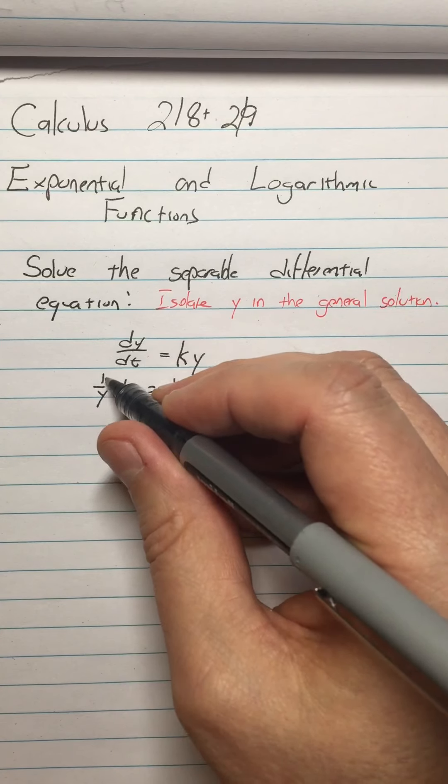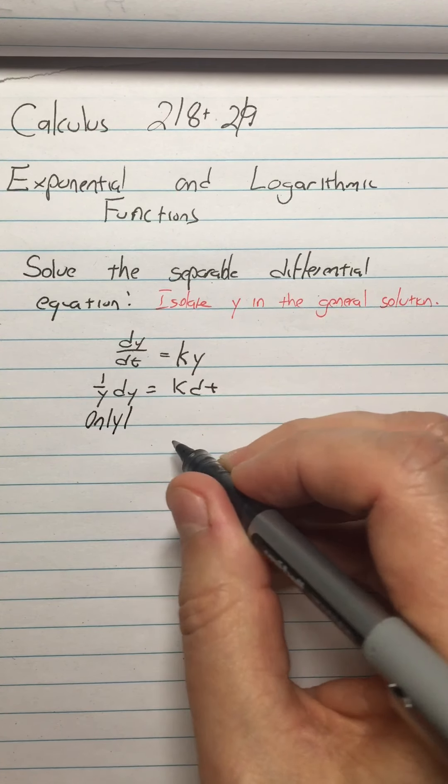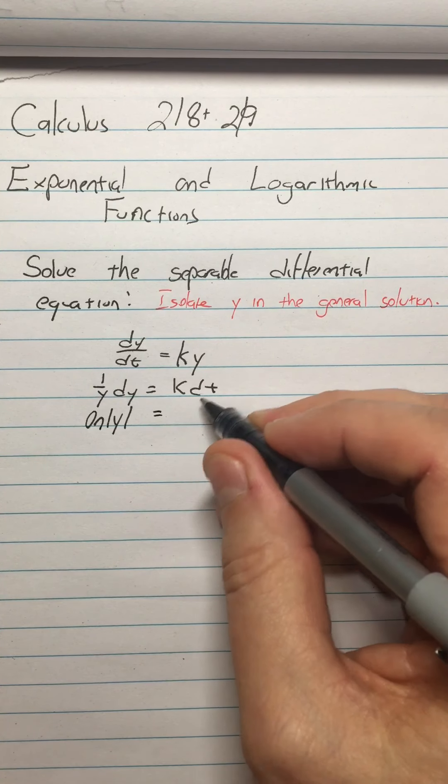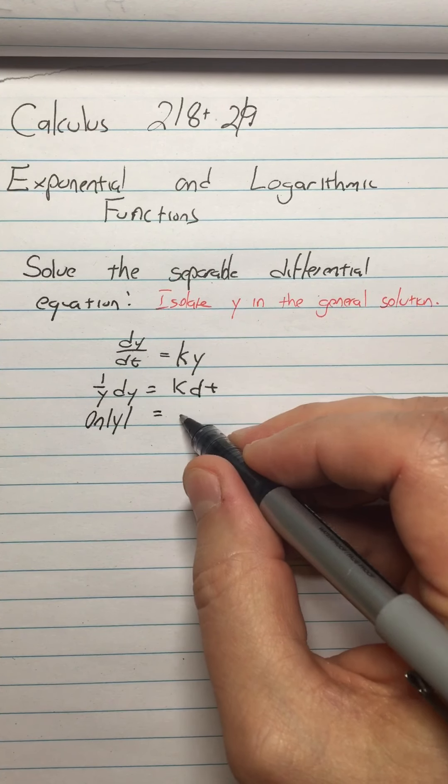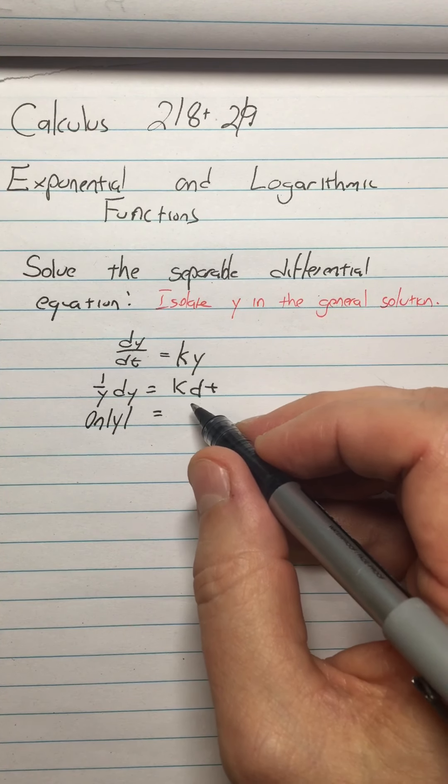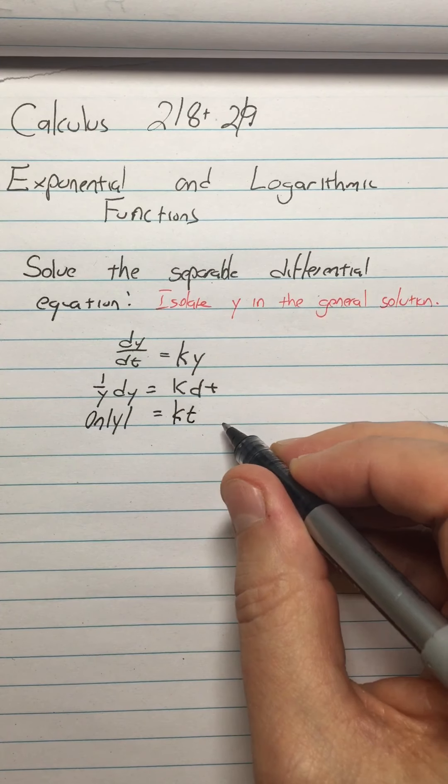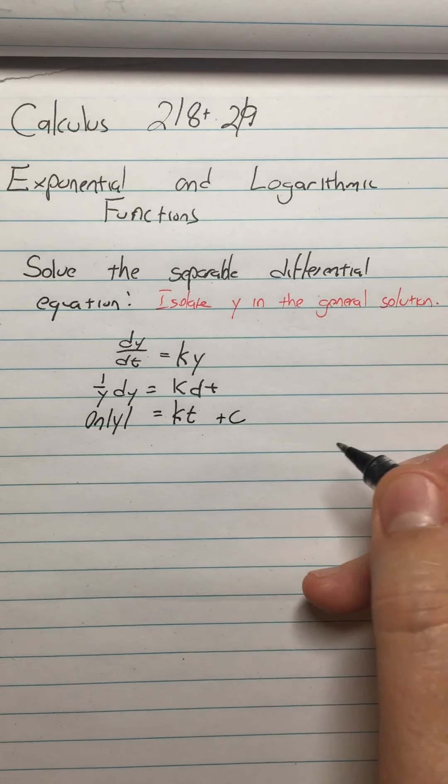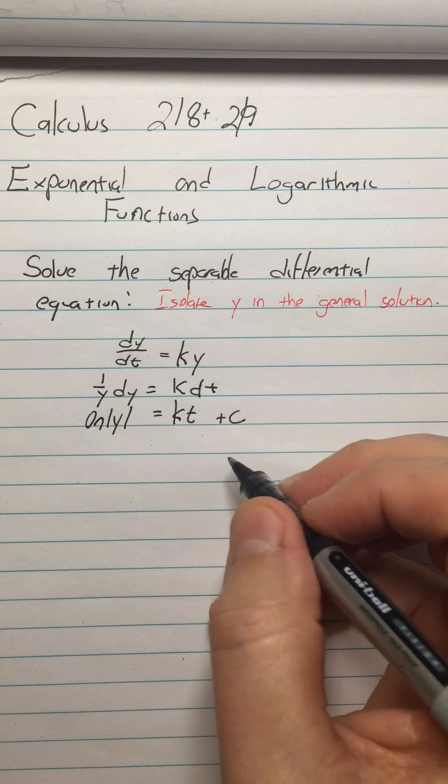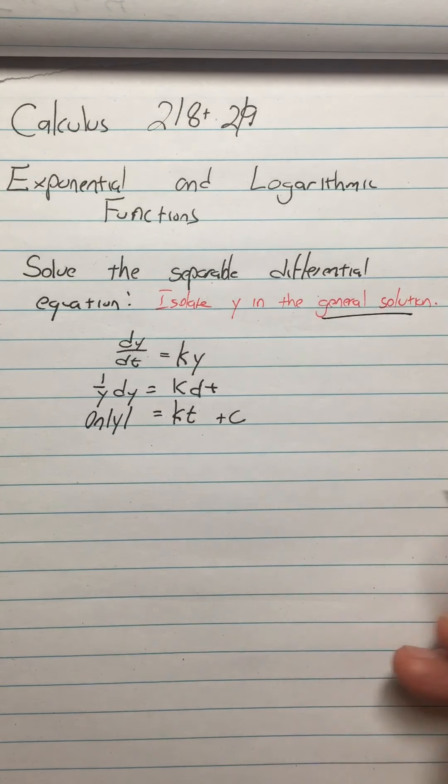Then we're gonna have anti-derivative of 1 over Y is ln absolute value of Y. And that equals, if I do the anti-derivative of K, just like doing anti-derivative of 3 would be 3T, anti-derivative of K is gonna be KT. And here's where I'll put the plus C in. So really, I've gotten the general solution already. This is the general solution.